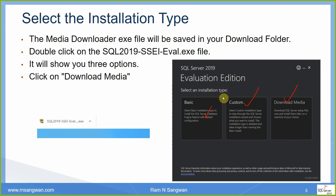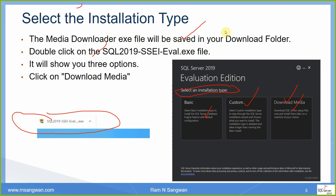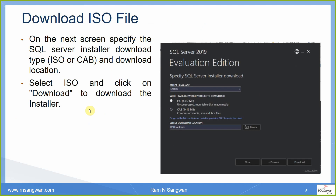Download Media, Custom, or Basic — based on what type of installation you want it will download the media file. Interestingly, this is not the media itself — this is a media downloader. The media downloader .exe file will be downloaded and saved in your Downloads folder. Double-click this folder — that is SQL Server 2019 SSE Evaluation — it will show you three options; click Download Media.